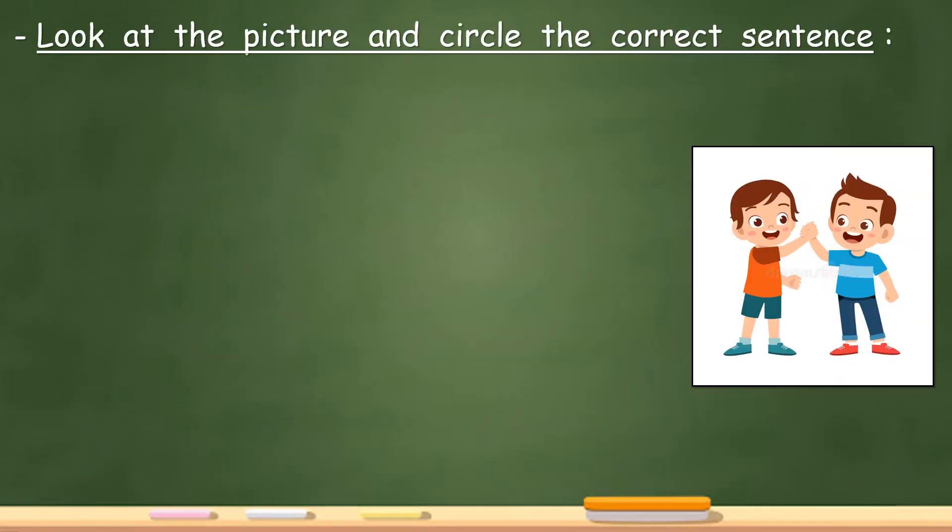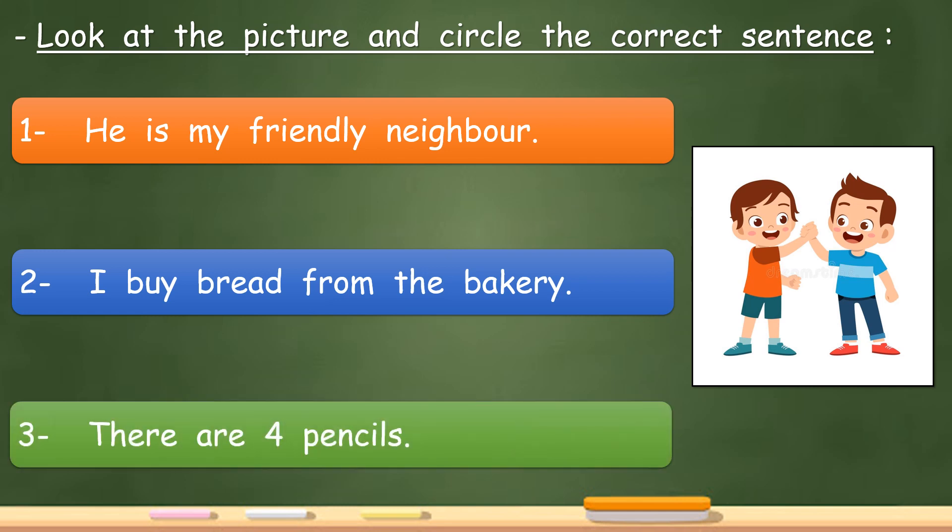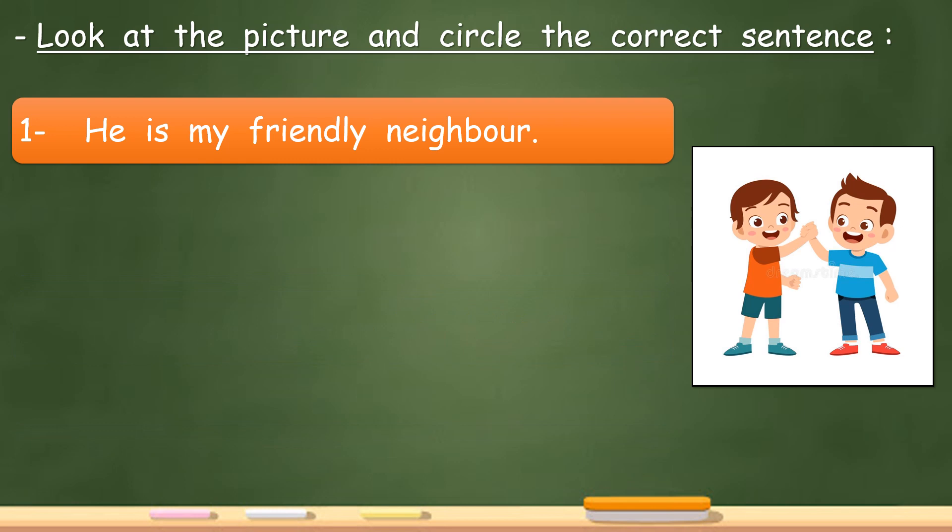Look at the picture and circle the correct answer. Number one: he is my friendly neighbor. Number two: I buy bread from the bakery. Number three: there are four pencils. Very good, it's number one: he is my friendly neighbor.